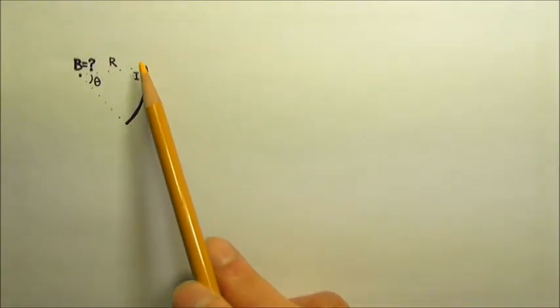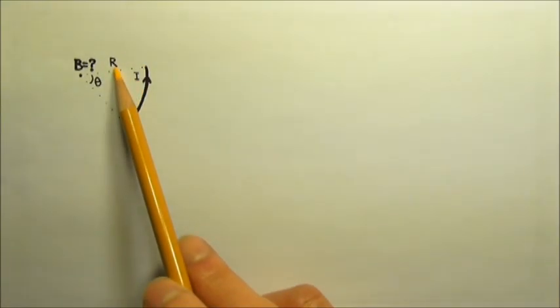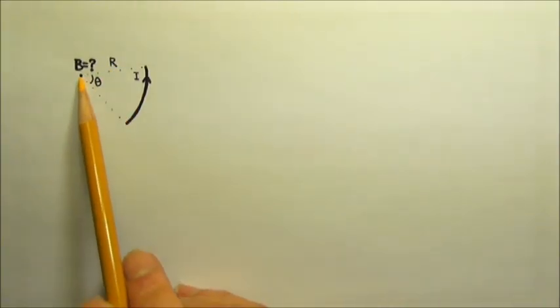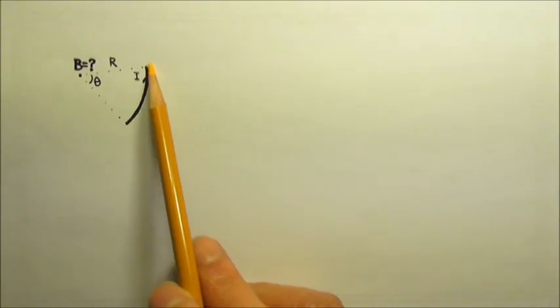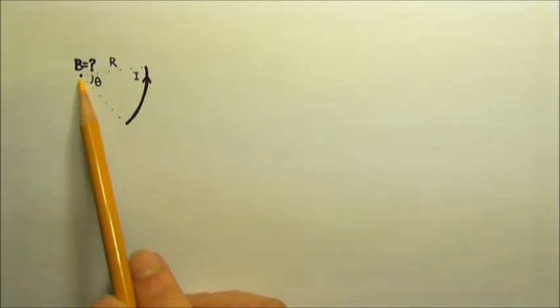This is an arc of current I with radius R. Let's find the direction and magnitude of the magnetic field due to this arc of current at the center of the circular arc.